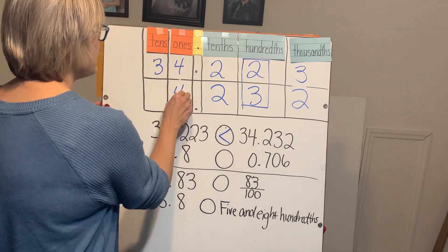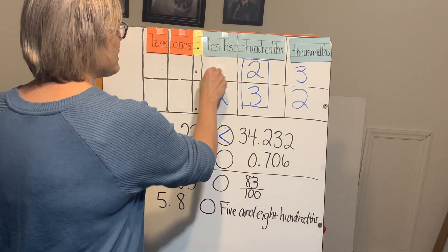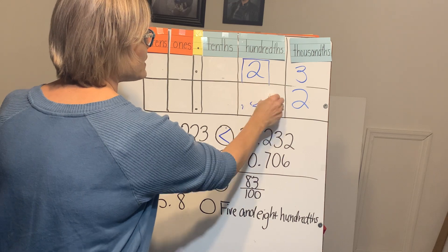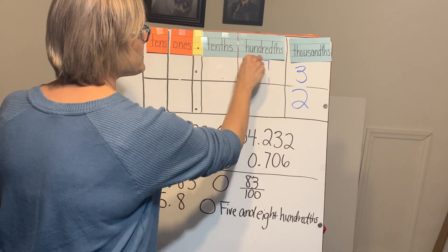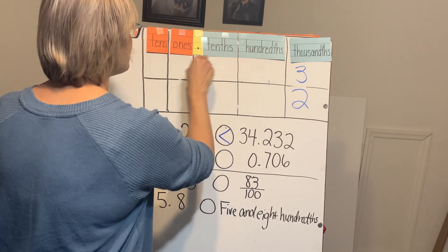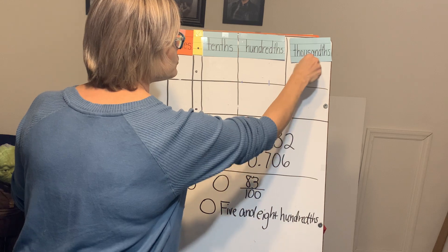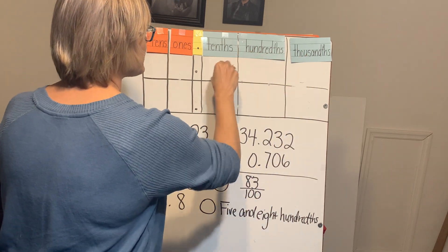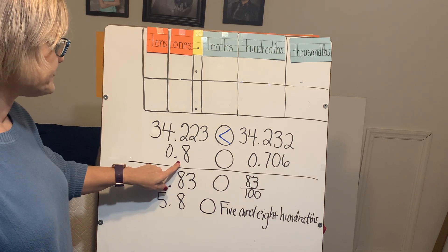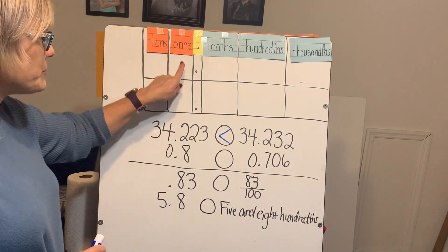Now we're going to go down to the next set of numbers. While I erase, remember we use the place value chart to compare — we go left to right just like you read. That's another helpful tool to help you order these correctly.